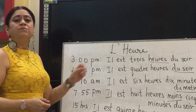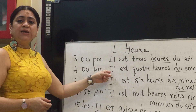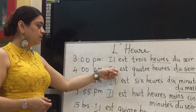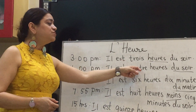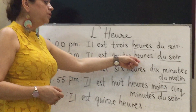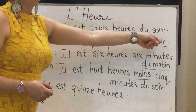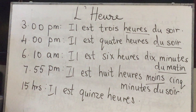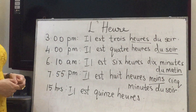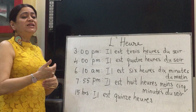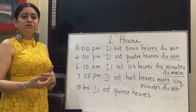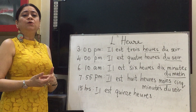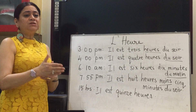4 P.M. will be written as 'il est quatre heures du soir.' Now when a time has certain minutes to it, we complete the hours and then state the minutes.